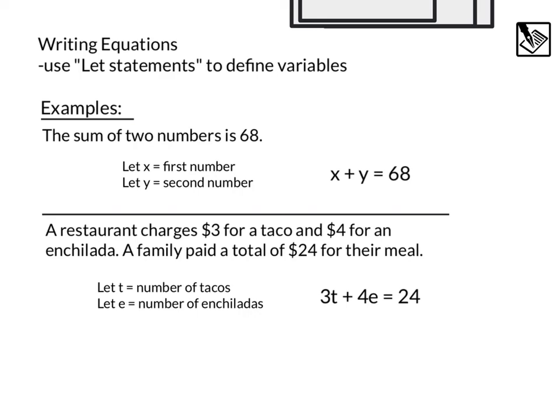If you are someone that kind of likes to break things down better, it's never a bad idea to underline some keywords like sum of two numbers is 68. For this one, we know it's $3 for a taco, $4 for an enchilada, and a total is $24. Sometimes kind of underlining can help tell us what can we use for our variables. How can we set that equation up? All right, everyone. Hope this video was helpful.